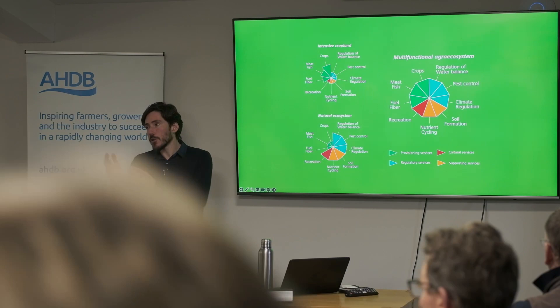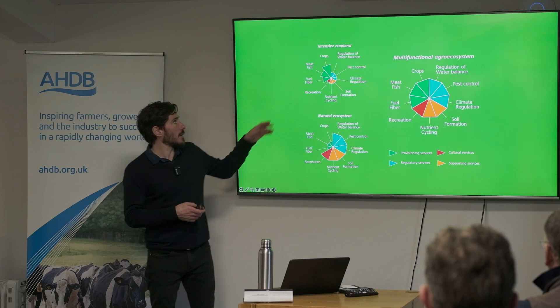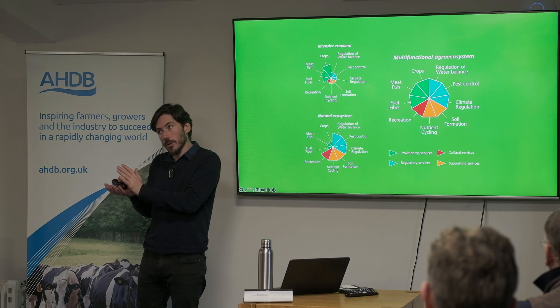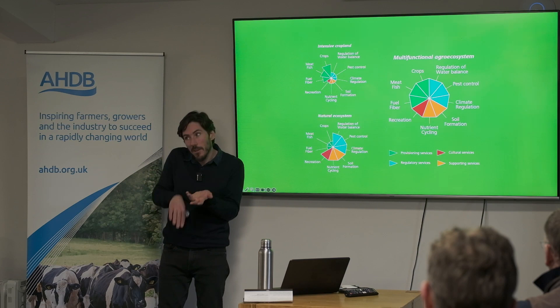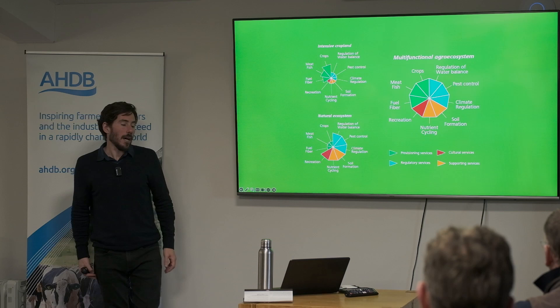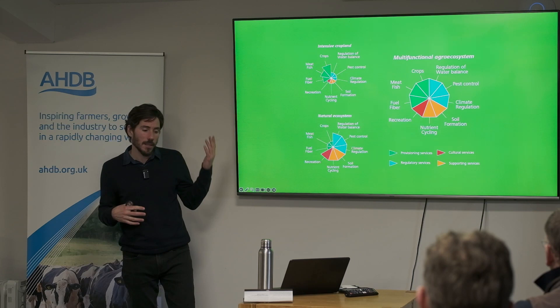Agricultural systems need to produce food and take care of the landscapes in which they sit. Generally, intensive agriculture is very good at being productive, but not so good at some of these other things. Natural ecosystems are very good at those other things but not normally so productive. Can we redesign farming systems to still be productive but also multifunctional?